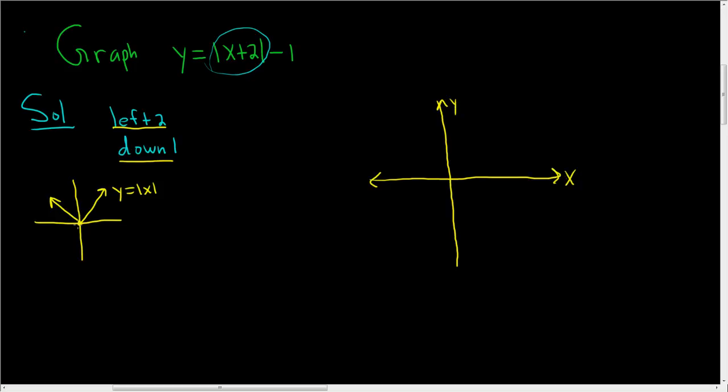So we're going to move this little tip here which always starts at 0, 0. So we're going to go left 2 and down 1, so I'm going to use tick marks. So 1, 2, and then down 1, so maybe there. So there is the tip of the absolute value function.